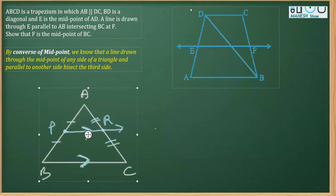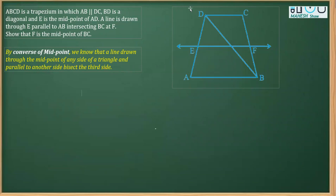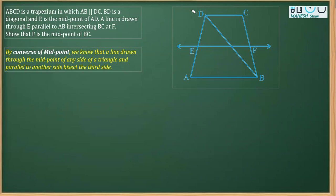Now let's read the question. We are given that ABCD is a trapezium, where the two parallel sides are AB and DC. As you know, in a trapezium one pair of opposite sides are parallel, and here AB is parallel to DC.